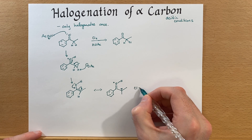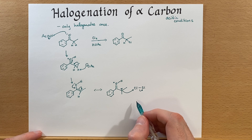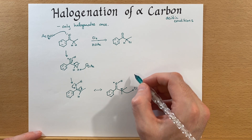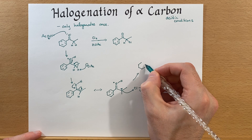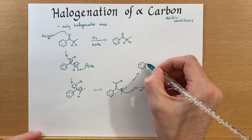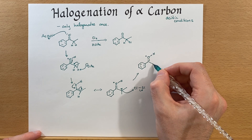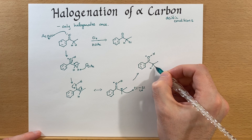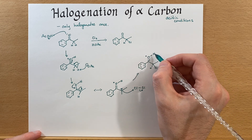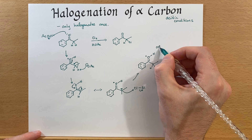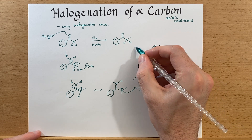So, bring in our chlorine. We're going to do an SN2 reaction on that, and from there it's going to form this intermediate. We're almost done — we're going to have our base come in and pick off that proton. That forms our product.